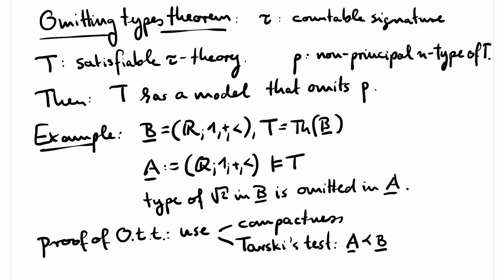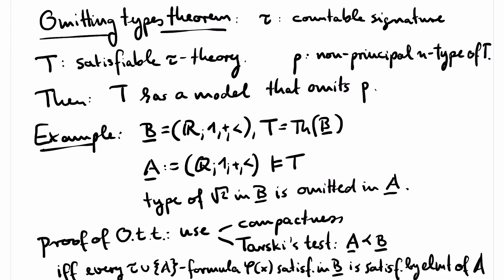Tarski's test states that it suffices to verify that every formula with parameters from A which is satisfiable in B is also satisfiable by an element of A. In other words, we must be able to find witnesses in A for existentially quantified variables.